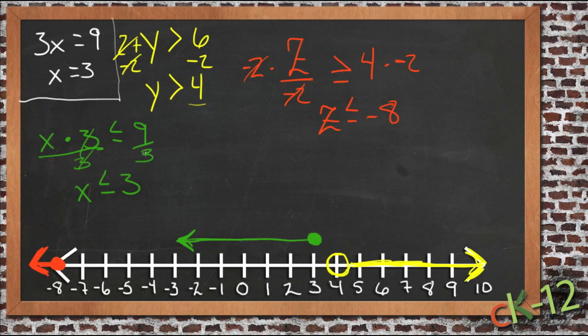So really, as you can see, all the rules you're used to using for equations will apply for inequalities. There really isn't anything new to learn other than this one rule that says, if you multiply or divide by a negative, switch the direction of the sign. That's it.